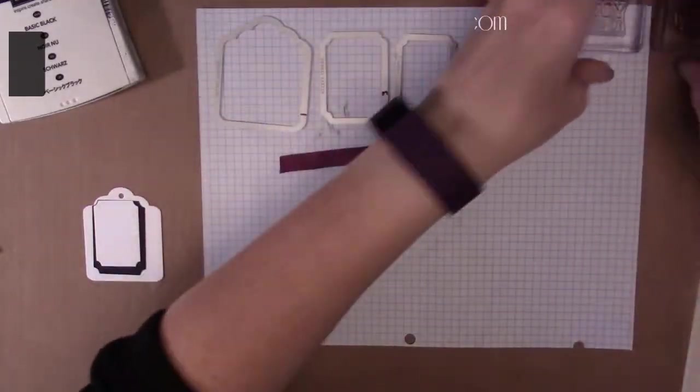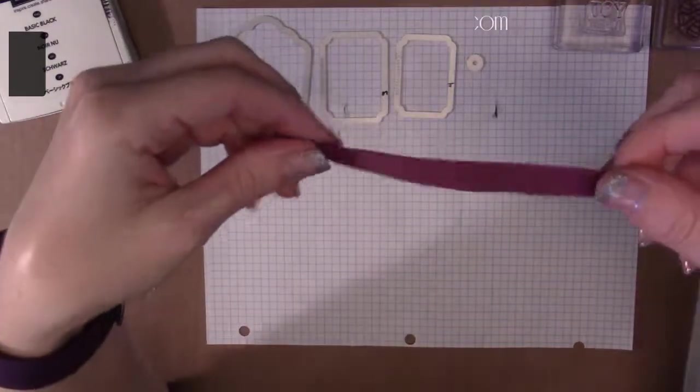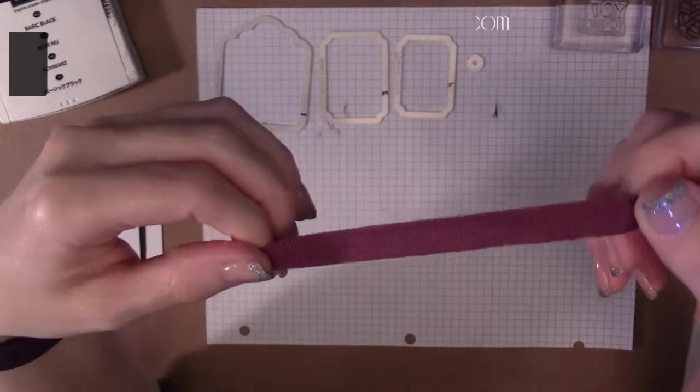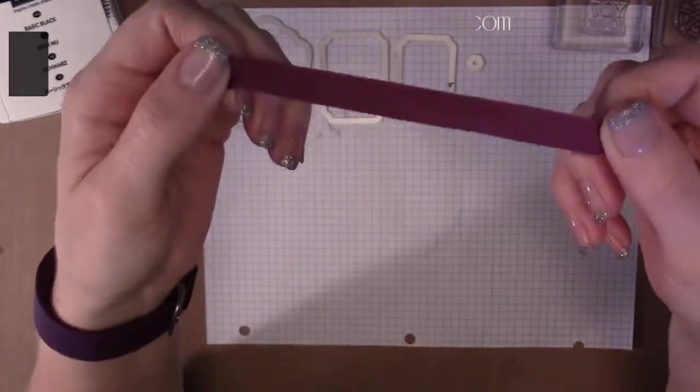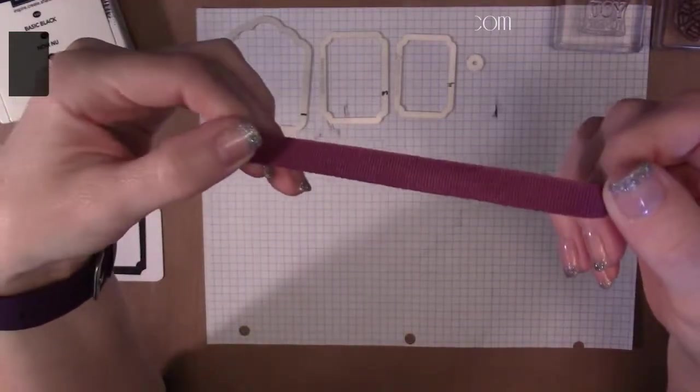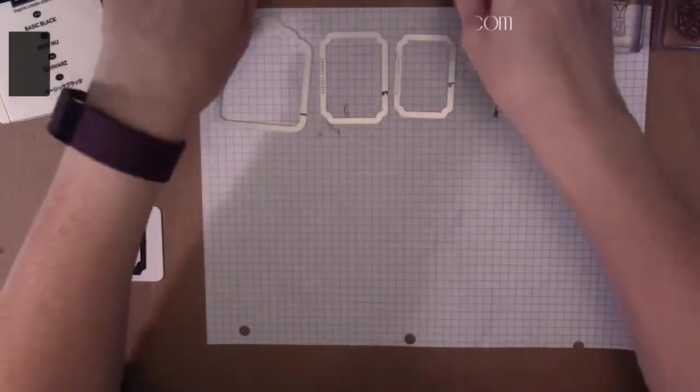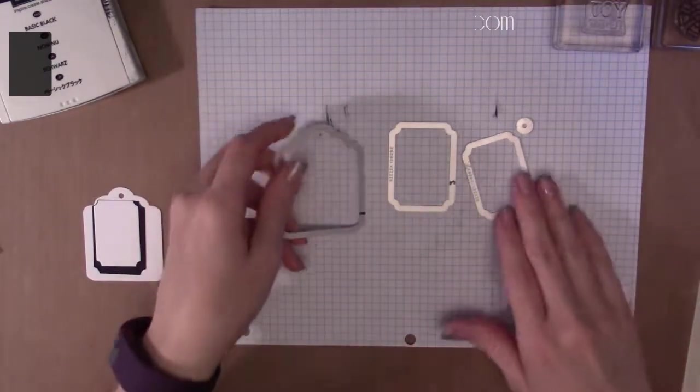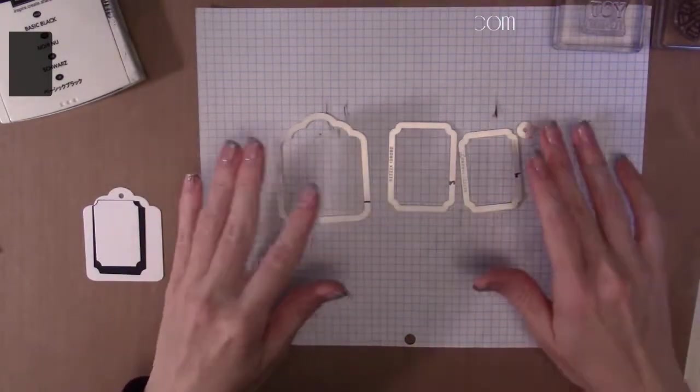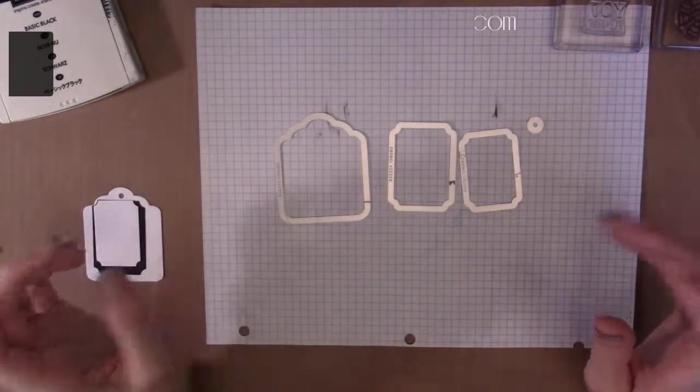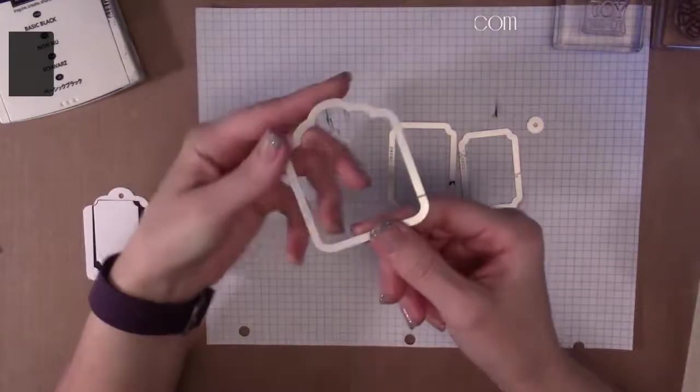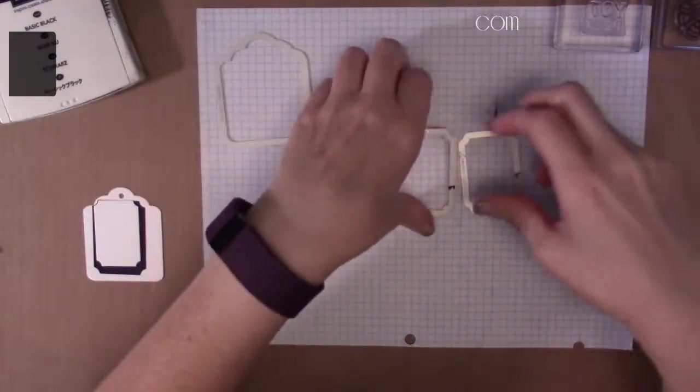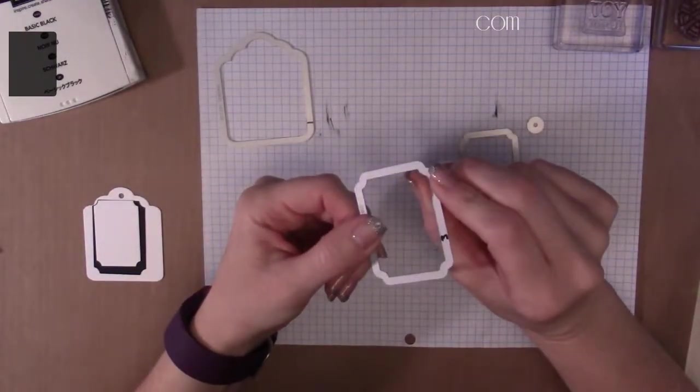In the holiday catalog you can get a trio of ribbons: Delightful Dijon, Mint Macaron, and Rich Razzleberry. We're using a piece of Rich Razzleberry which is approximately five inches long, it's just got to fit around the tag. From our Tags and Labels Framelits set I have numbered mine and measured them so I can better tell you the dimensions of everything. You're gonna need the biggest tag which measures two by two and seven sixteenths. You're going to need the third largest.